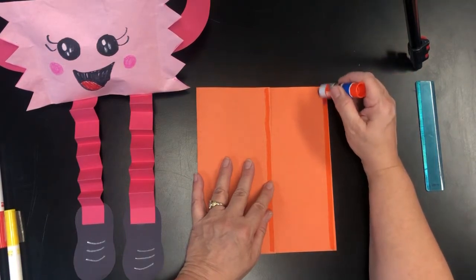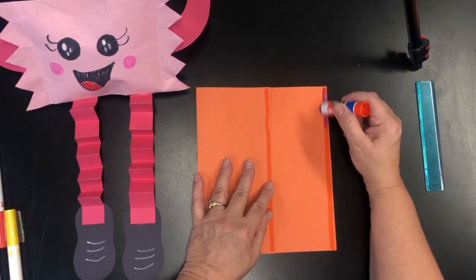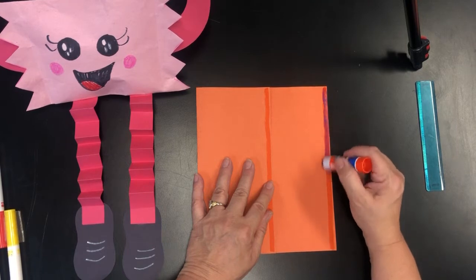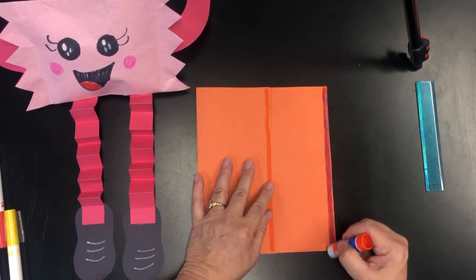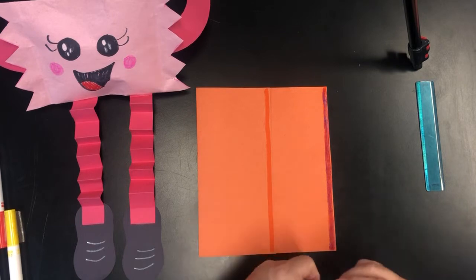So I'm gonna take my glue stick and I'm just gonna cover that orange line in glue. Skinny glue line. We don't want it to be a wide glue line.